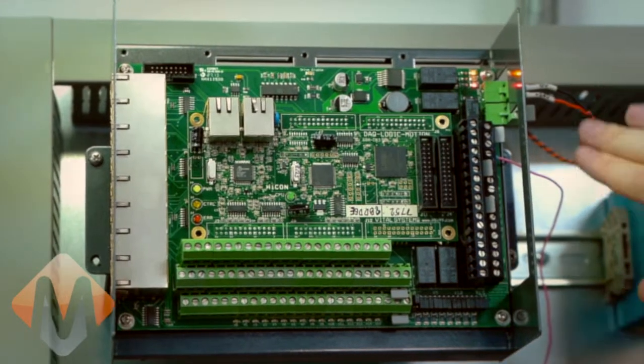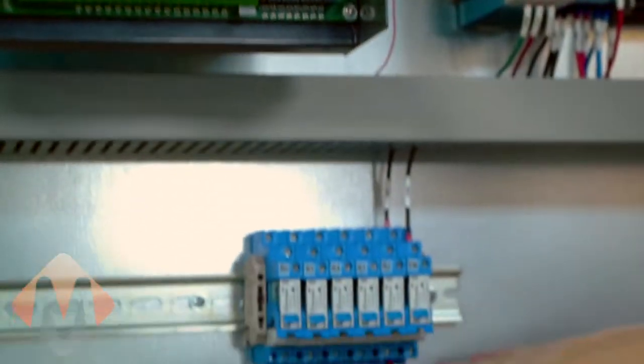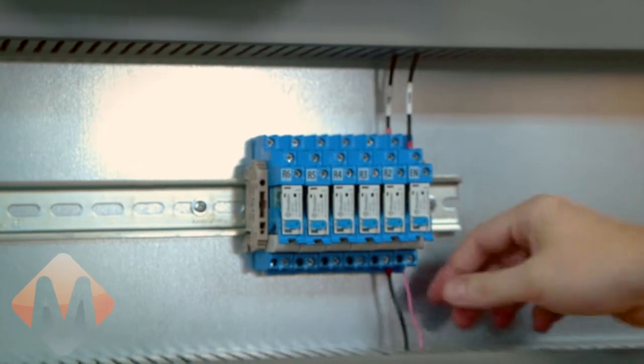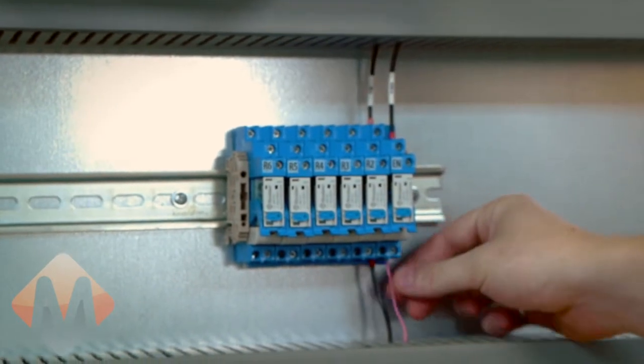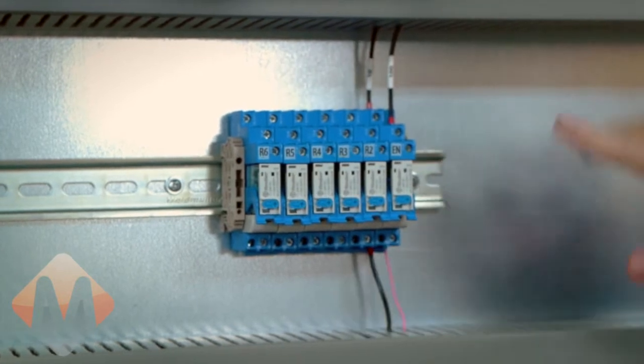From the HiCon, we have the 24 volt enable signal coming here to the enable relay. The enable relay has the 24 volts into one side of the coil, and then your ground here comes up to the ground for the 24 volt power supply.